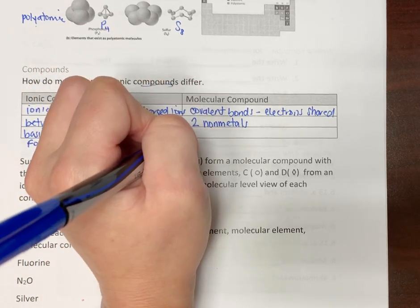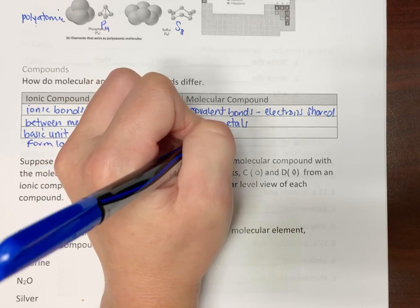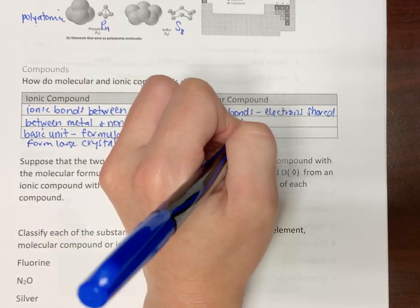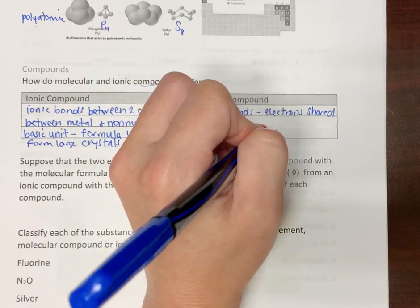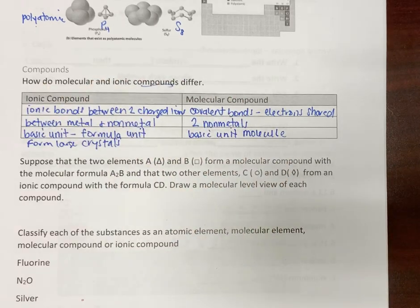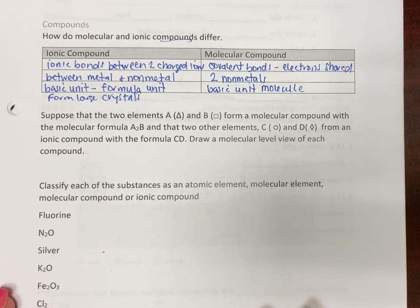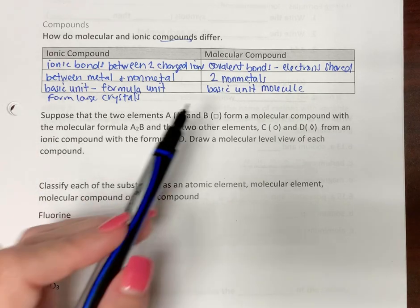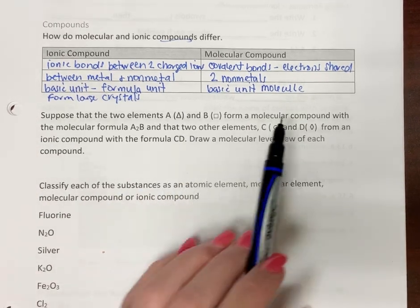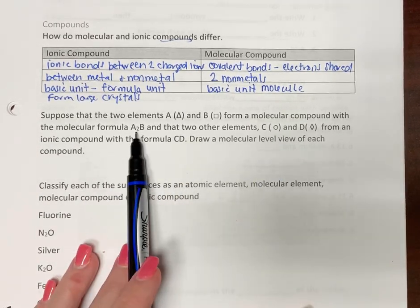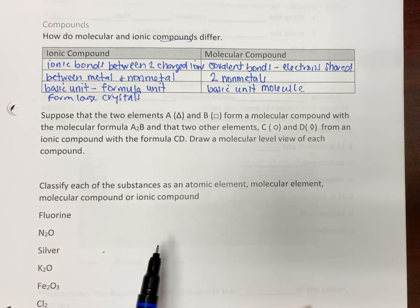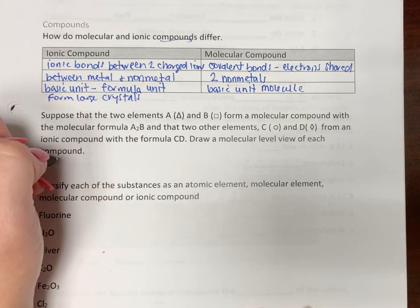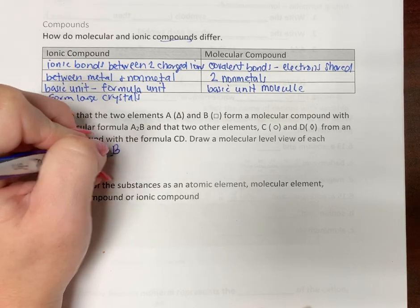A molecular compound is going to have its basic unit as a molecule, which is what we're already familiar with. So, let's look at this. Two elements, A and B, that are shapes. They're going to form a molecular compound, and here's the formula. Let's draw a view of it. So, here, we have A2B.